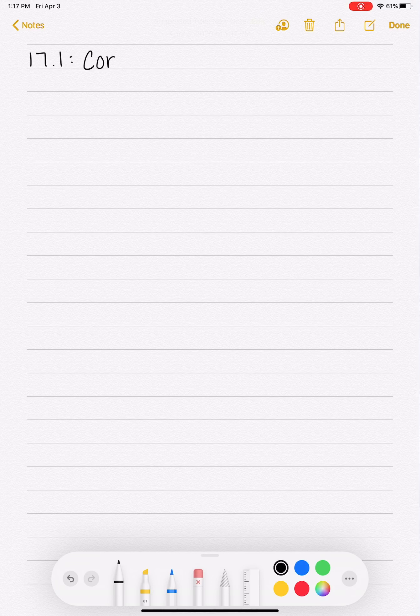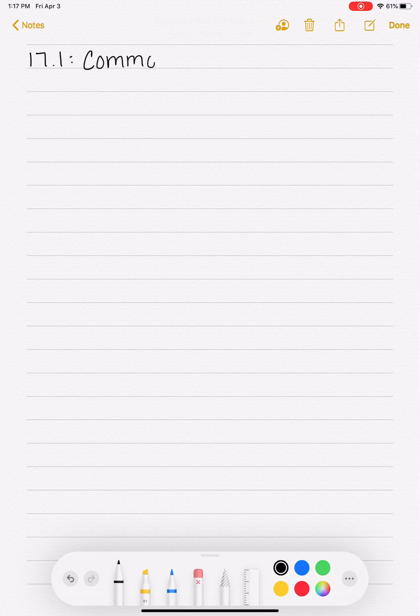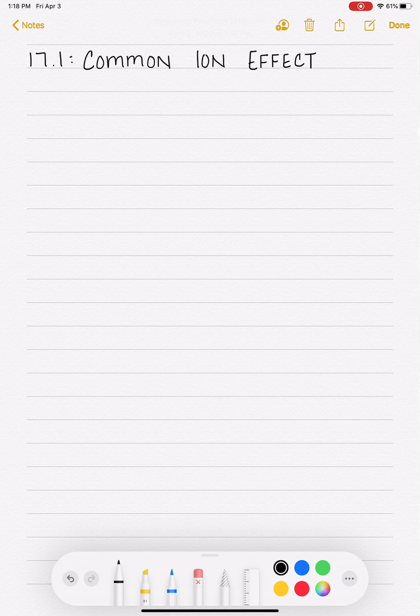In chapter 17, we're going to start off talking about buffers. And in order for us to be able to understand buffers, we need to first understand something called the common ion effect. So in this section, 17.1, I'm just going to be describing to you exactly what the common ion effect is.